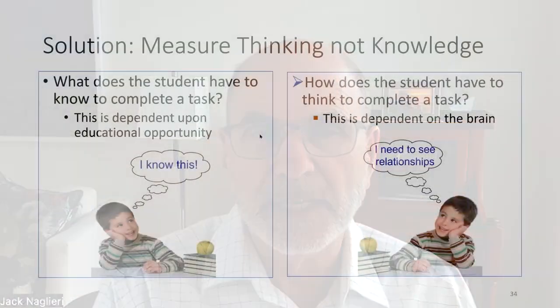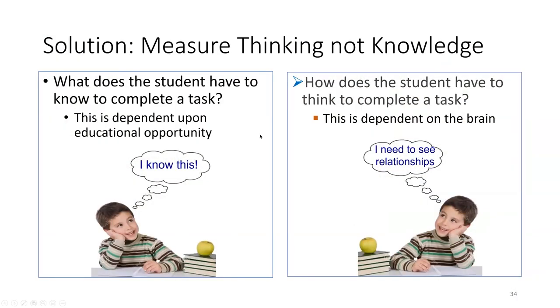We discussed thinking versus knowing briefly, and it seems to be a very important focus of this test. So can you explain the difference between the two? And how do the Nagliari general ability tests measure thinking rather than knowing? So this is a very, very important point. It's important because it helps us understand what our goal is when we're trying to assess a person's level of intelligence.